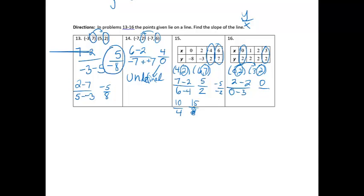So 2 minus 2 is 0, 0 minus 3 is negative 3. And then once again, I'm going to use my calculator: 0 divided by negative 3 does give me an answer of 0. So the slope of that line is 0. You might have gotten a different number on the bottom, but it still reduces to 0.